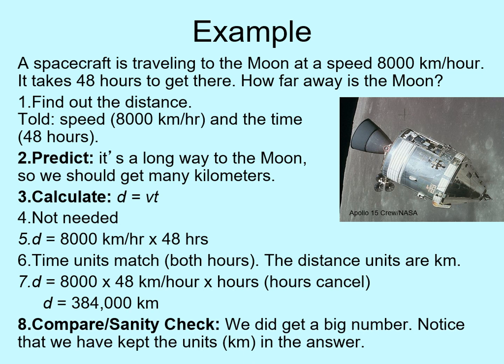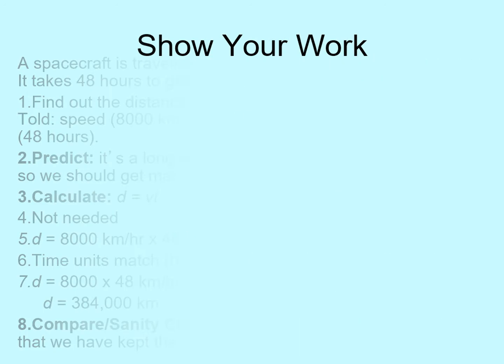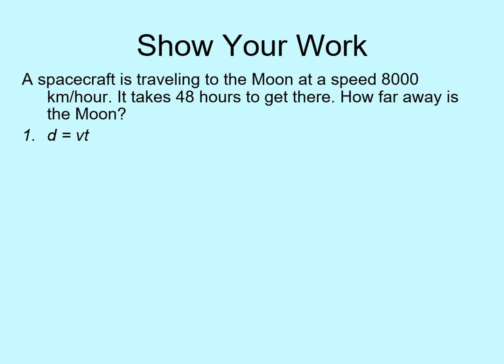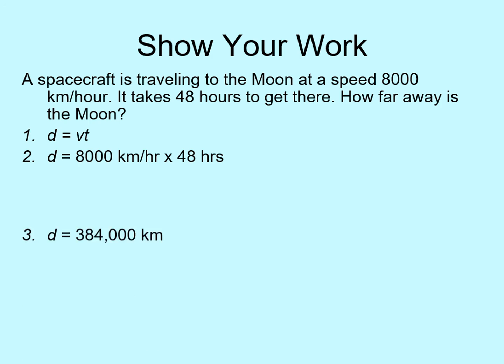Finally, we do a comparison. As we expected, the distance was a lot of kilometers, so that looks right. Also, the units are distance units — kilometers. If we'd gotten kilometers per hour or hours or something else, we'd know there was a mistake because we're not getting a distance. In the calculation part of the assignment — steps three through seven — you are expected to show your work. You don't have to show everything listed here, but at minimum you need the formula (D equals VT), the formula with all values listed, any unit conversion if needed, and the answer with its units.